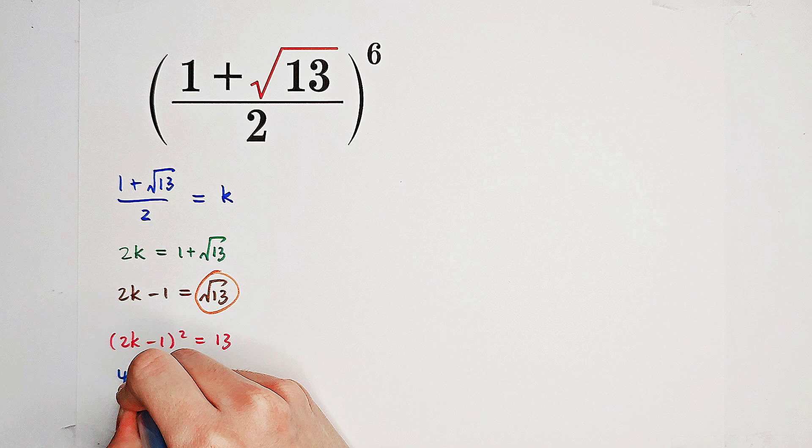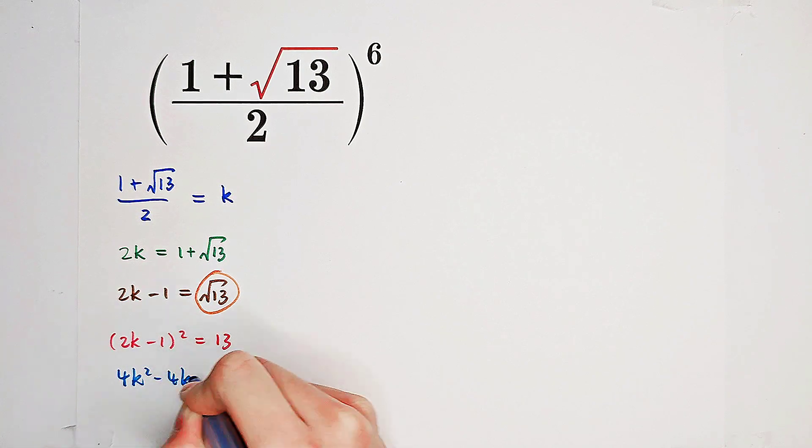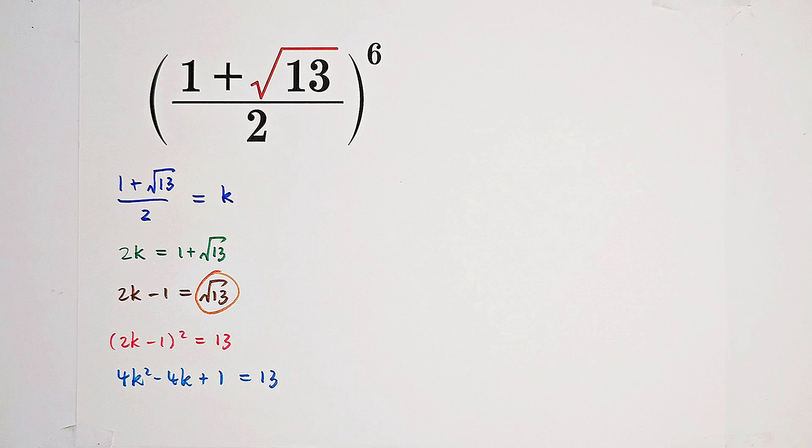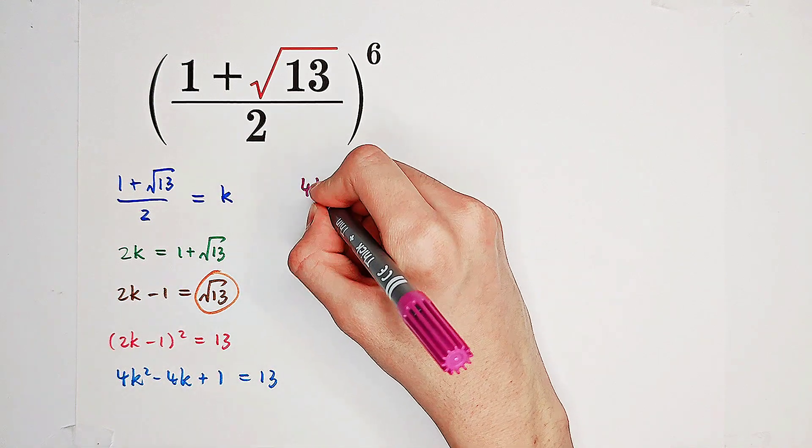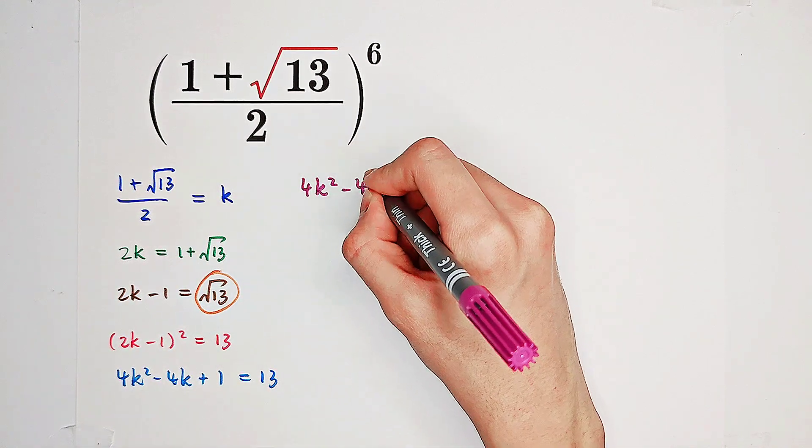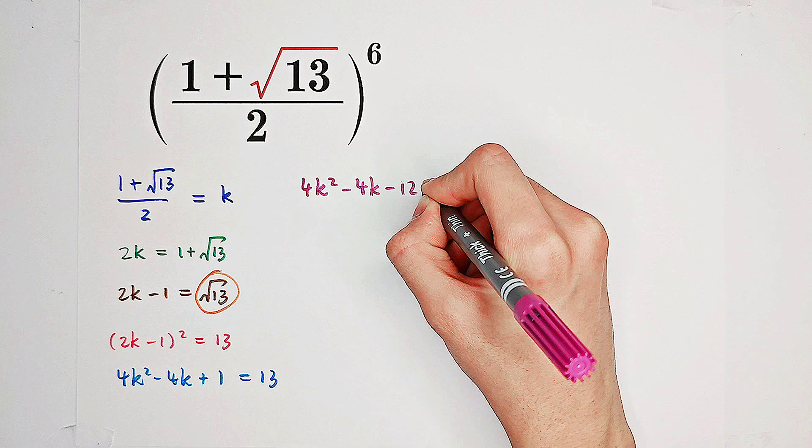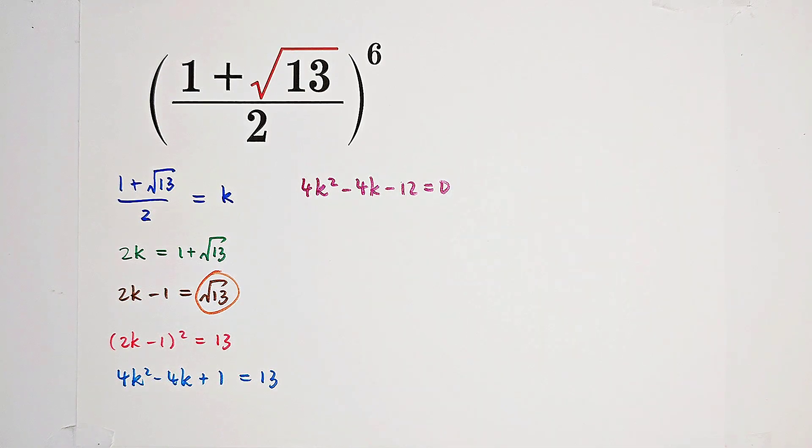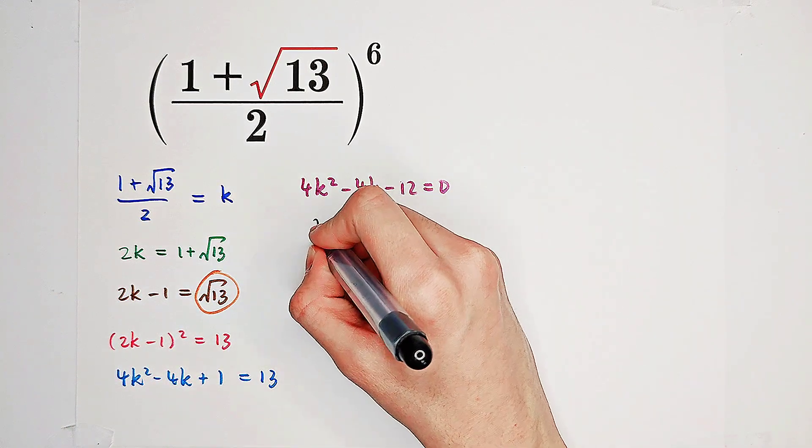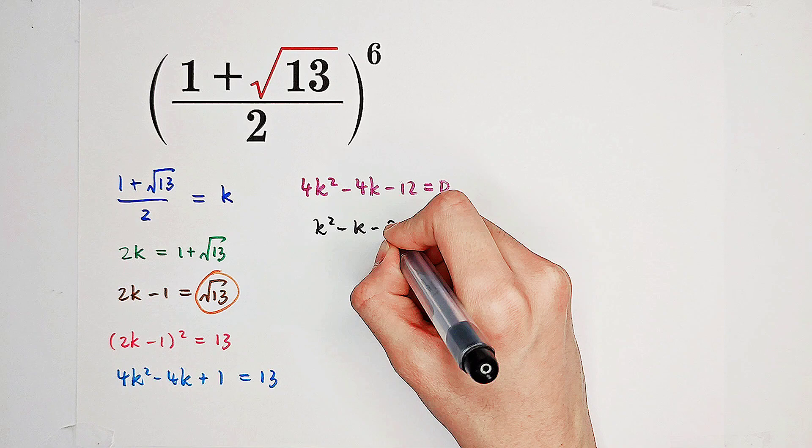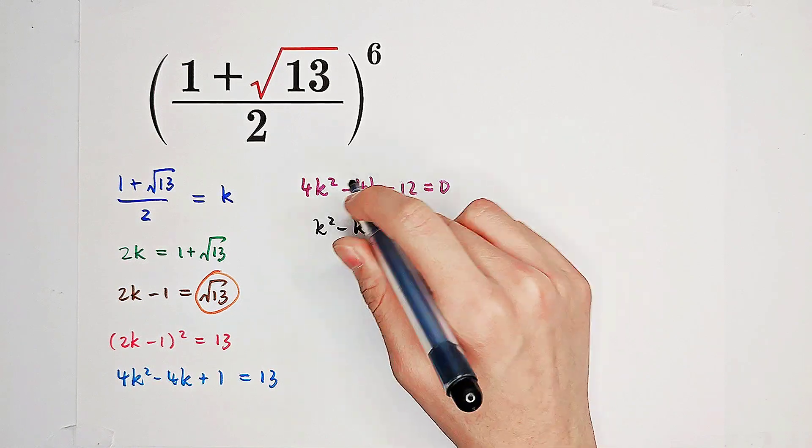So 4k squared minus 4k plus 1 equals 13. 4k squared minus 4k minus 12 equals 0. And we get k squared minus k minus 3 equals 0. Just divide both sides by 3.